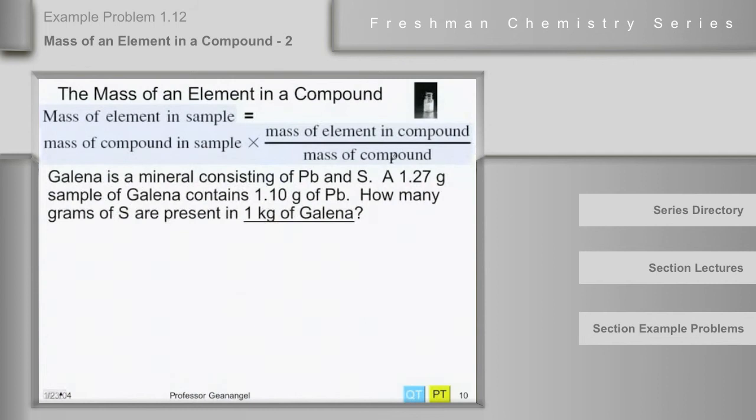And the example I want to use is galena. Galena is a mineral, actually, that consists of lead and sulfur. And in the laboratory, a 1.27 gram sample of galena, which is the mass of the galena compound, is found to contain 1.1 gram of lead.